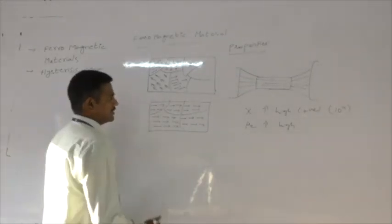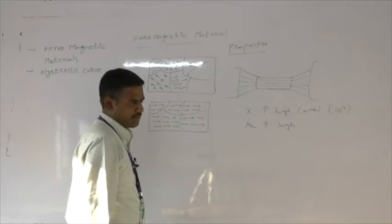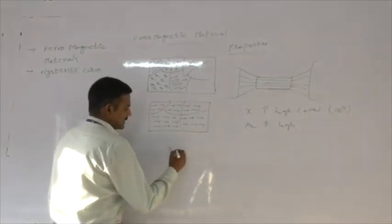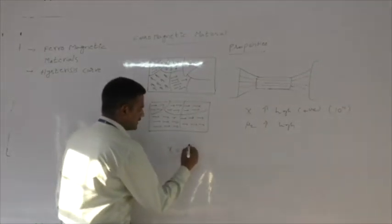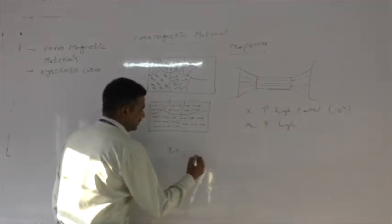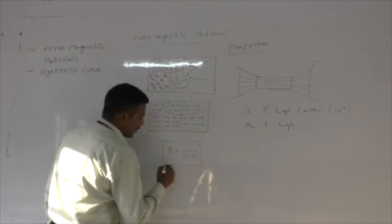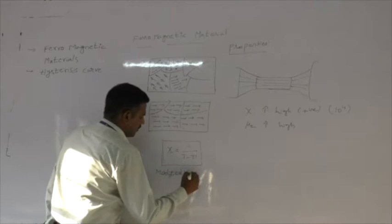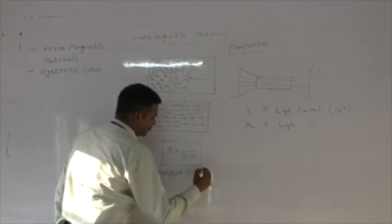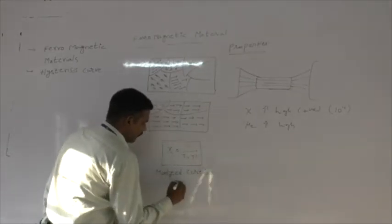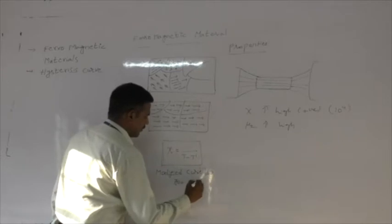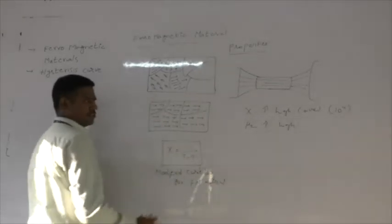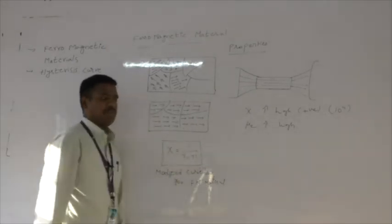Regarding temperature dependence, for ferromagnetic materials the susceptibility can be written as χ equals C divided by (T minus T-prime). This is called the modified Curie's law for ferromagnetic materials. Here C is the Curie constant and T-prime is the Curie temperature.